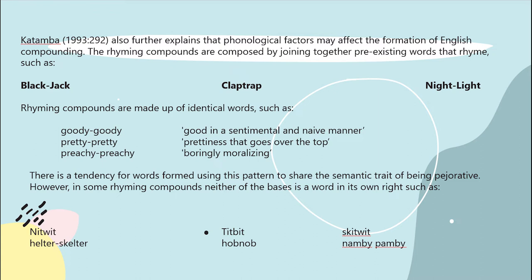Rhyming compounds are made up of identical words, such as goody-goody, which means good in a sentimental and naive manner; pretty-pretty, which means prettiness that goes over the top; and pretty-pretty, which means boringly moralizing.